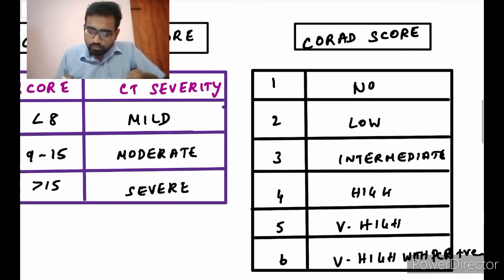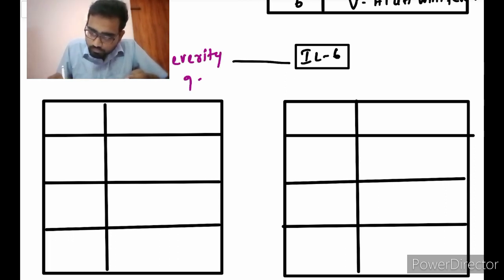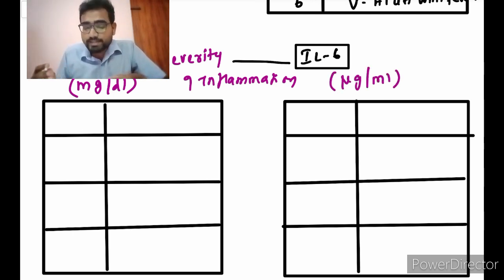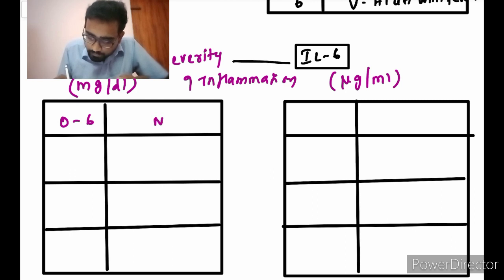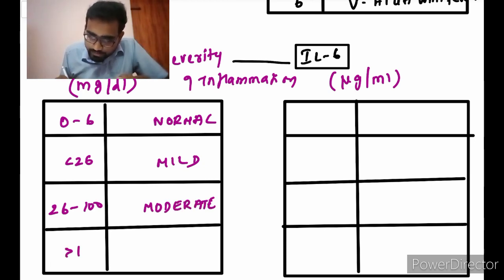Next, coming to C-reactive protein: CRP and interleukin-6 both detect the severity of inflammation. C-reactive proteins are measured in milligrams per dL. Values of 0 to 6 are normal; values less than 26 are mild; values of 26 to 100 are moderate; and anything more than 100 is severe.